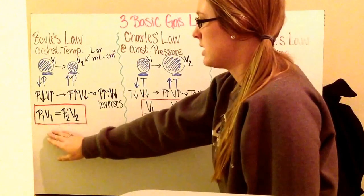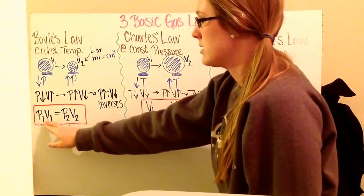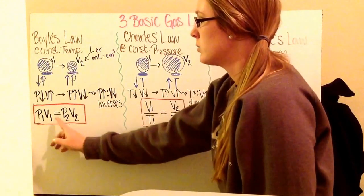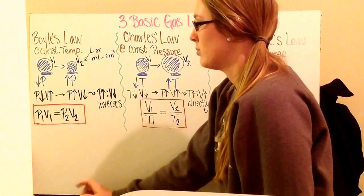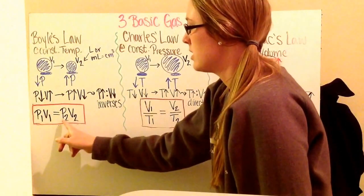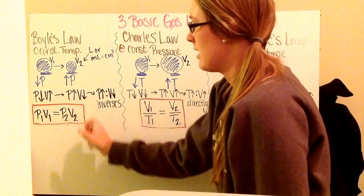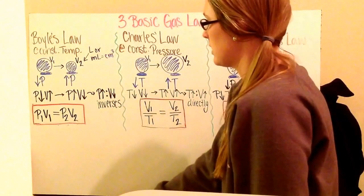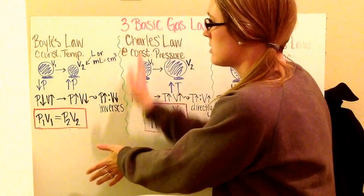To show this, we say that P1 times V1 — your initial pressure times your initial volume — is equal to P2 times V2, your final pressure times your final volume. Because as pressure goes up, volume comes down, and vice versa, the numbers will always equal each other because of the relationship. Take a moment to copy down just Boyle's Law.